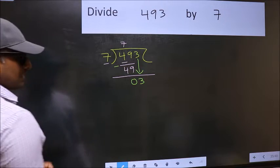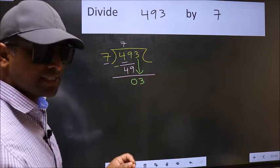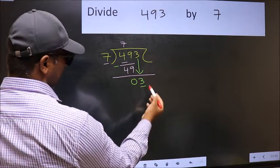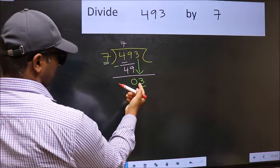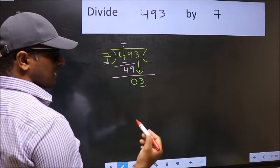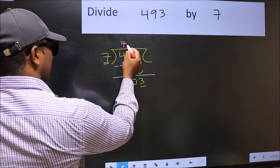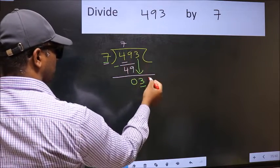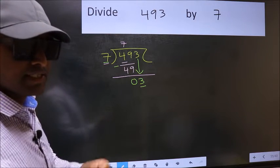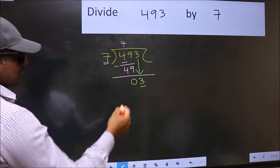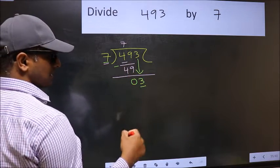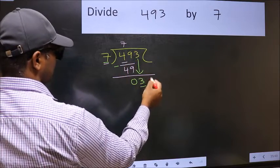After this step, the mistake happens. Here we have 3 and here 7. 3 is smaller than 7, so what many do is they directly put a dot and take 0, which is wrong. Why is it wrong? Because you just brought this number down, and in the same step, you want to put a dot and take 0.